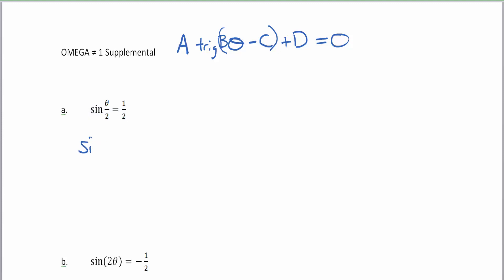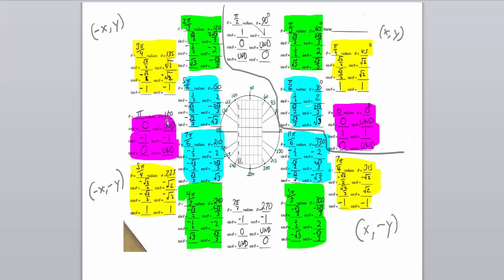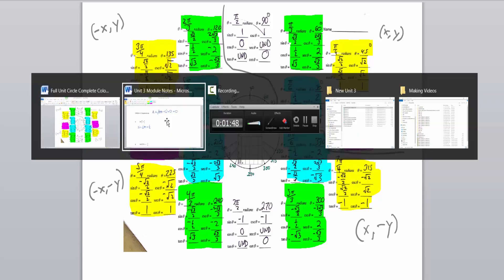We can write this as the sine of one-half theta equal to one-half. To solve this equation, we'll need our knowledge of general equations for a trigonometric equation, and we'll definitely need our unit circle chart — so be sure you have that handy. Let's begin.